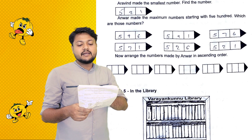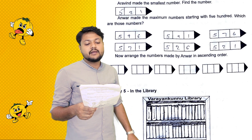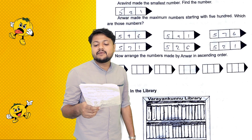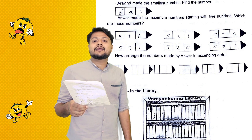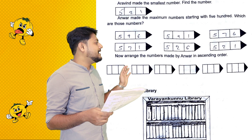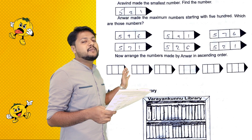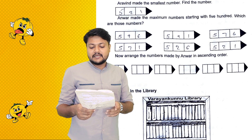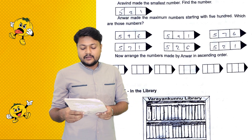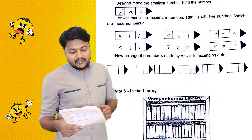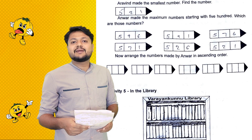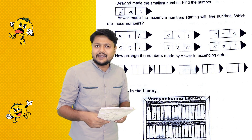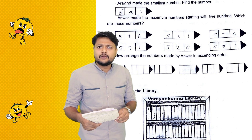Now arrange numbers made by Anwar in ascending order. Ascending order will be arranged.